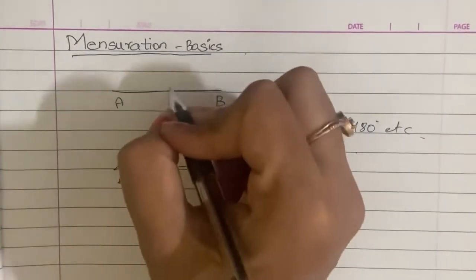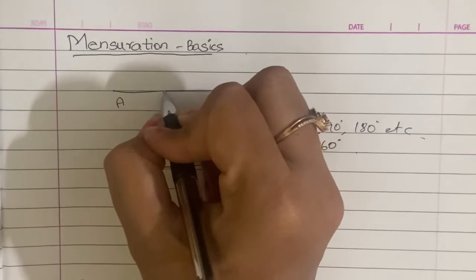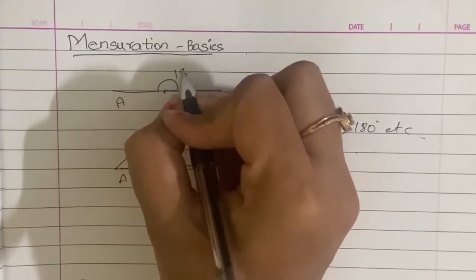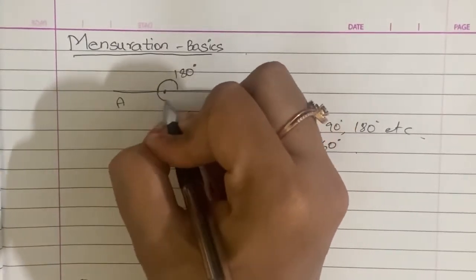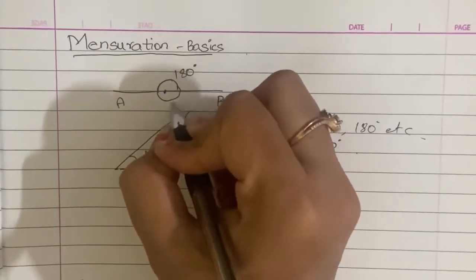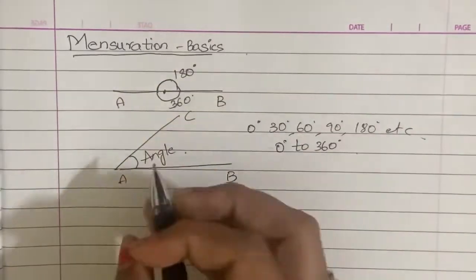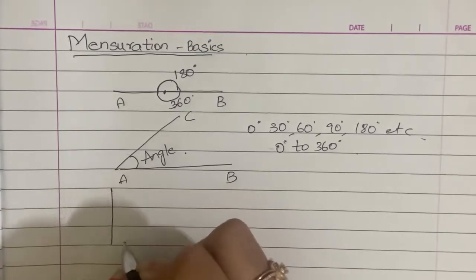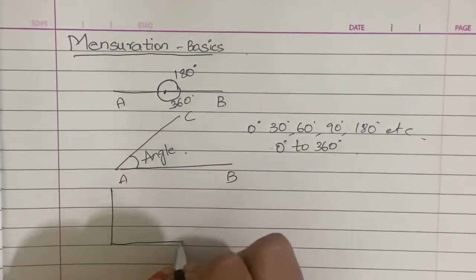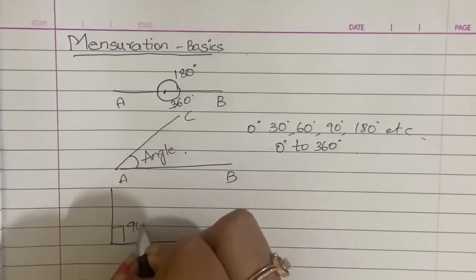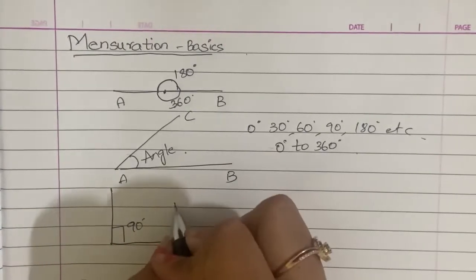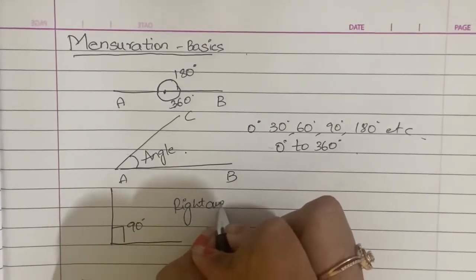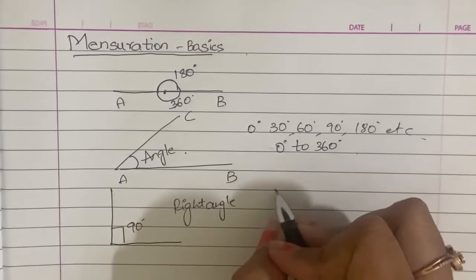So, a straight line — this angle is 180 degrees. The total angle is 360 degrees. This is 90 degrees, which is the right angle.